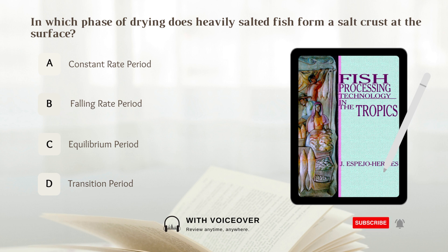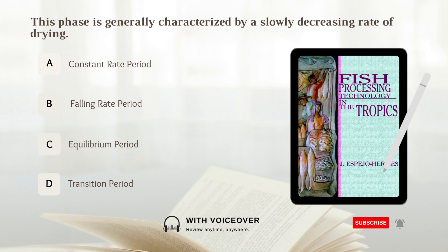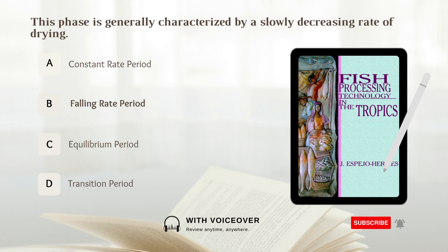In which phase of drying does heavily salted fish form a salt crust at the surface? Answer: A. Constant rate period. This phase is generally characterized by a slowly decreasing rate of drying. A. Constant rate period. B. Falling rate period. C. Equilibrium period. D. Transition period. Answer: B. Falling rate period.